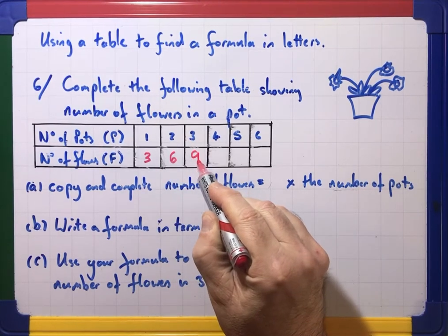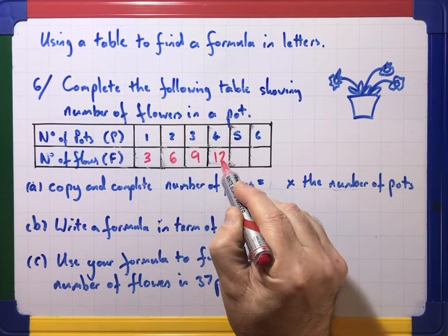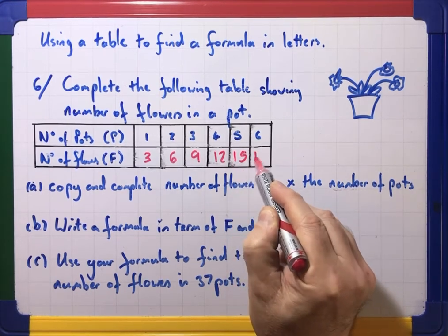So if you have two of them it will be six, three of them would be nine, twelve, fifteen, eighteen.